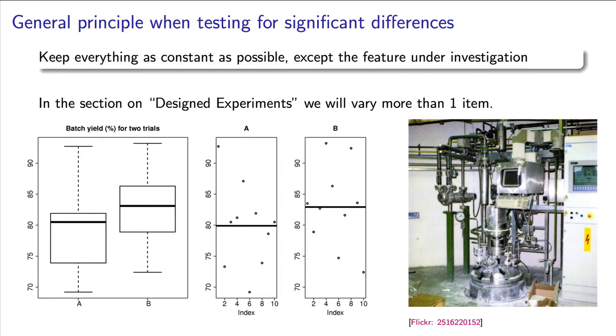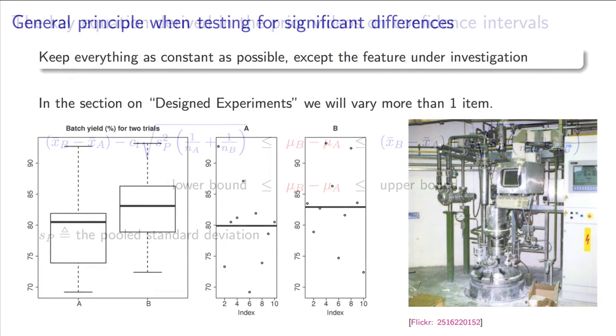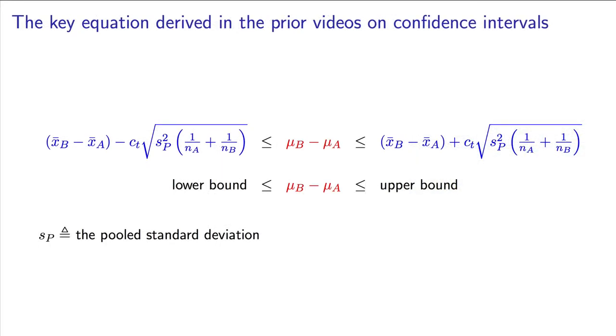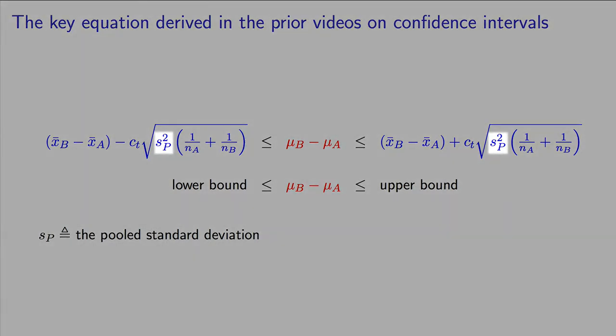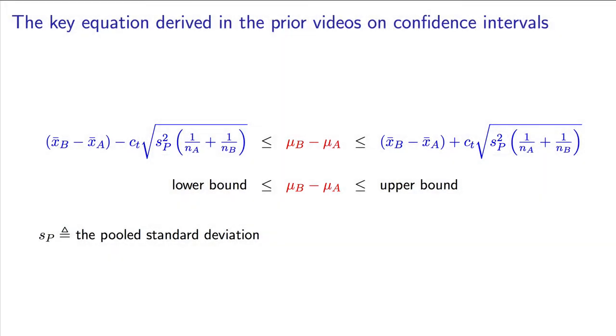In practice, those external changes will add extra variation into the process. And remember from the equation for the confidence interval, a larger variation here in the standard deviation will make the confidence interval wider than it should be. This could lead you to incorrectly concluding the change from A to B was not effective when it actually was.